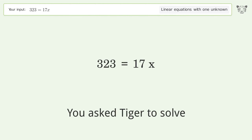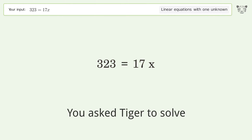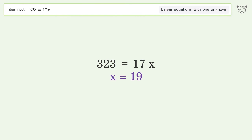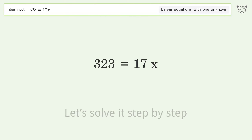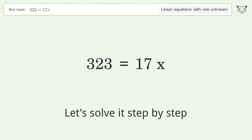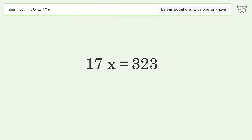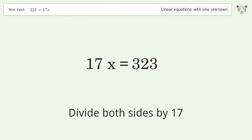You asked Tiger to solve this — it deals with linear equations with one unknown. The final result is x equals 19. Let's solve it step by step. Swap sides, then isolate the x by dividing both sides by 17.